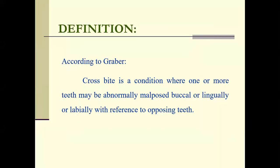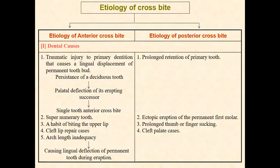Coming to the definition: what do you mean by a cross bite? A cross bite is a condition where one or more teeth may be abnormally malposed either buccally, lingually, or labially with reference to the opposing teeth — meaning it can be labially placed, lingually placed, or buccally placed.